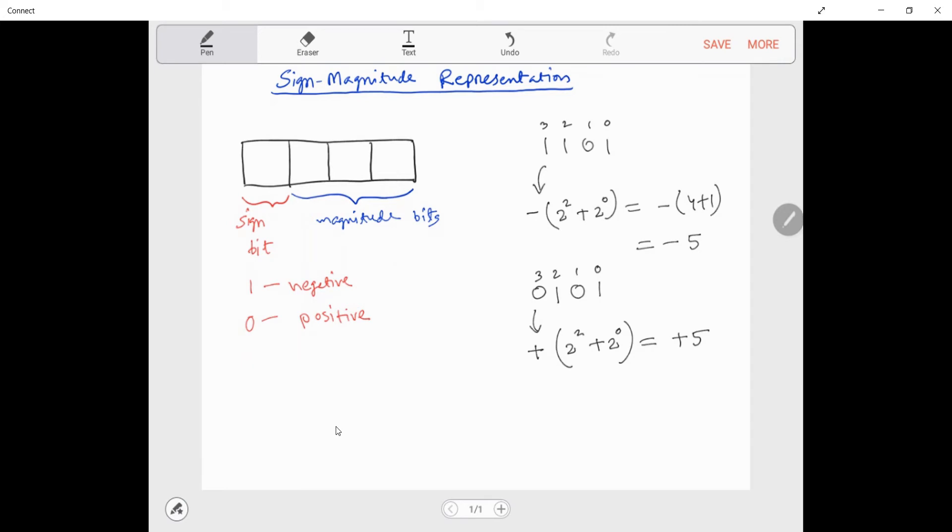In the same way, if you have eight bits: one, zero, zero, one, one, zero, zero, zero. The positions are zero, one, two, three, four, five, six, seven. So this is the sign bit, which is negative because it's one. And then you'll have two to the power of four plus two to the power of three. And this equals sixteen plus eight. So this is negative twenty-four.